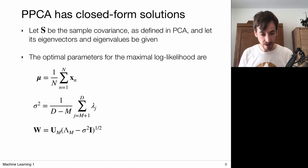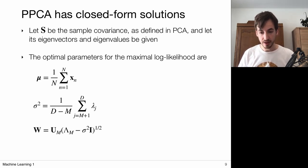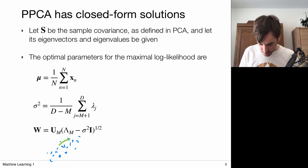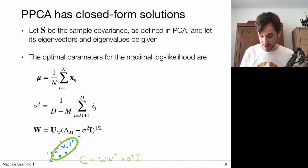Closed form solutions can be found for mu, sigma squared, and W. Without performing the full derivation, we can build intuition: we have a data distribution modeled by a Gaussian whose shape is described by covariance matrix C = WW^T + sigma squared I. This comes from our modeling choices — a linear forward model and isotropic noise.